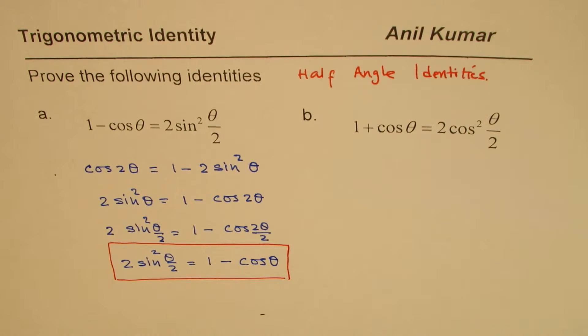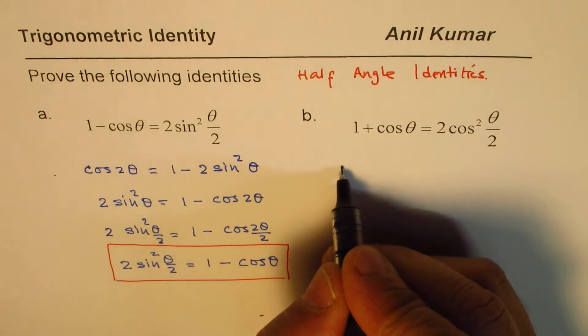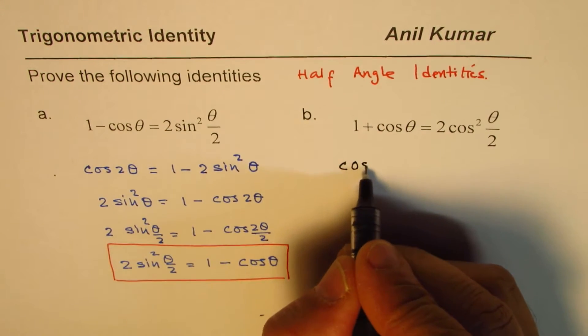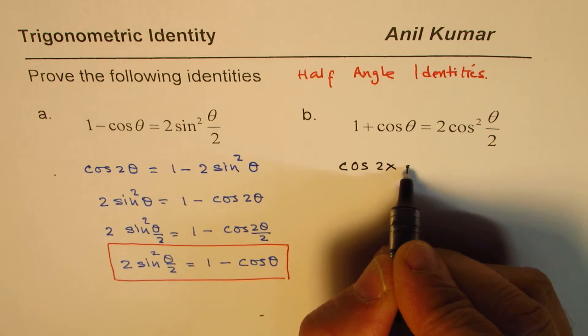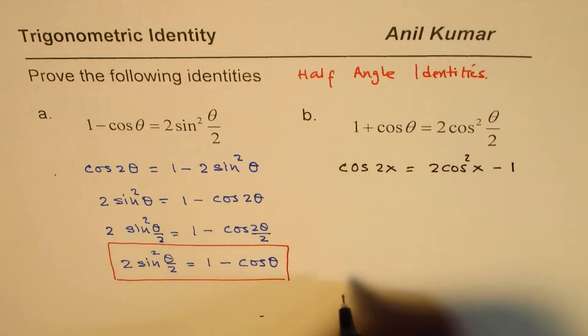So that is how we can prove it. The other proof is exactly similar, except for we are using a different formula here. So we can use, I'll take instead of 2 theta, I'll take x this time. So cos 2x could be written as 2 cos square x minus 1.